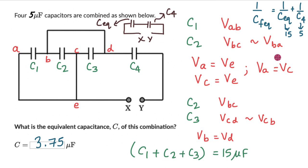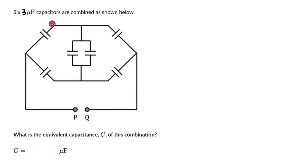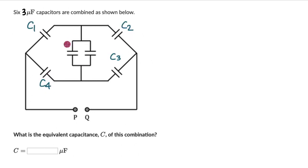Let's look at one more question. Here we have six 3 microfarad capacitors combined as shown below, connected across PQ. What is the equivalent capacitance of this entire combination? Like before, we start by labeling all the capacitors: C1, C2, C3, C4, C5, and C6. And we label all the nodes: A, B, C, and D. Our approach is again to identify sets of capacitors in series or parallel.